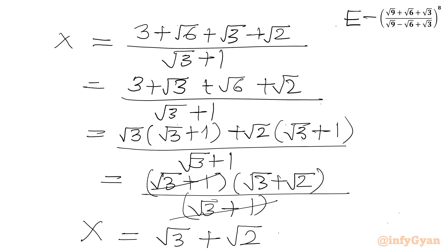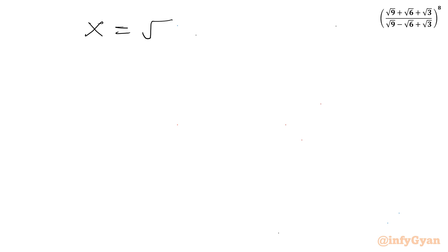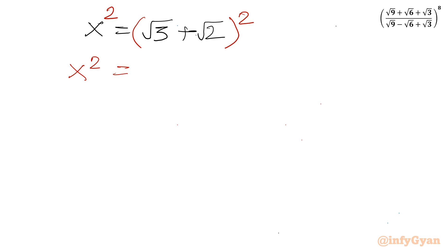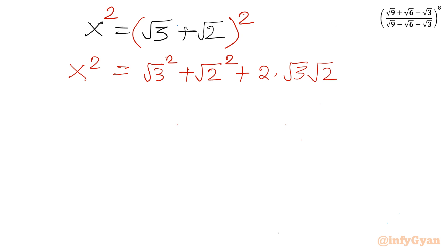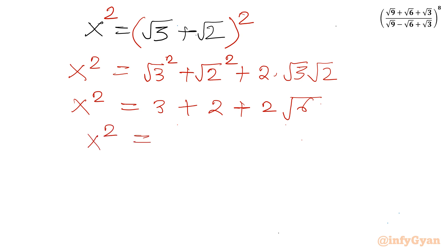Now what is asked? E equals x to the power 8, and x is √3 + √2. So we need to find x⁸. Consider squaring both sides: x² = (√3 + √2)² = (√3)² + (√2)² + 2·√3·√2 = 3 + 2 + 2√6. So x² = 5 + 2√6.